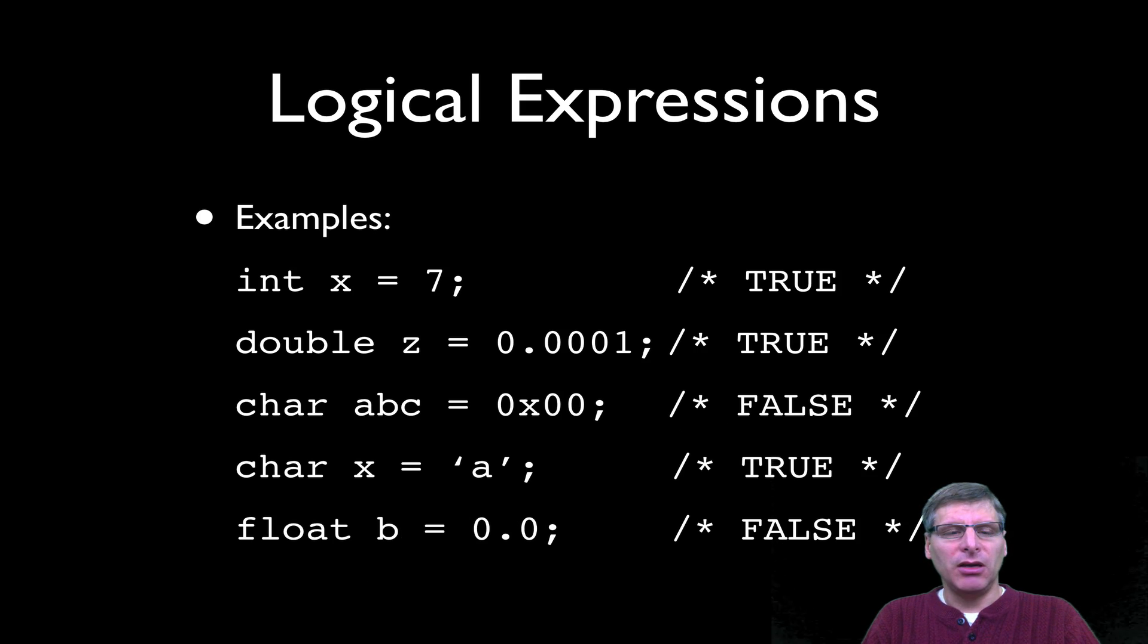So here's some examples. The variable int x holds a value 7. So if this were to appear where a logical expression is expected, it would appear or be evaluated as a true. In the second one, I have double z equals 0.0001. Once again, that's nonzero. So if this variable were used where a logical expression is expected, it would assume the value of true. In the third example, I have a car a, b, c equals hex, hex, hex zero. So the zero x preamble on that, or prefix on that literal there means it's hex zero. And that's going to evaluate to false because it's zero. In the next example, I have car x equals the literal character a, and that is also nonzero. So that will get evaluated as true. And then finally, I have a float b equals zero dot zero. That is zero. So if it was used in a logical expression, it would be false.